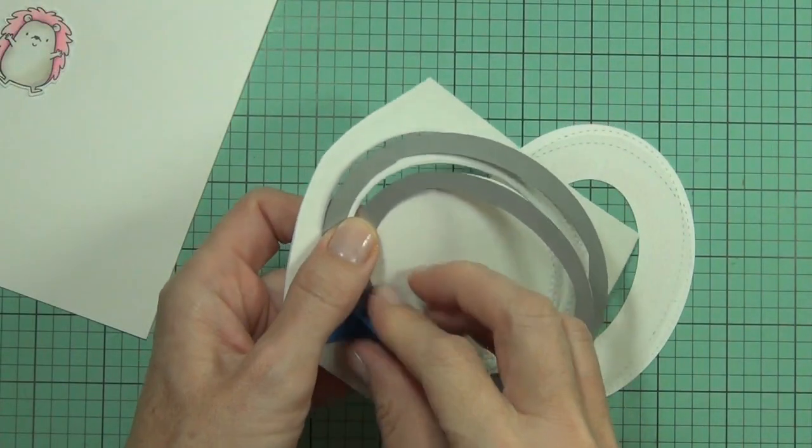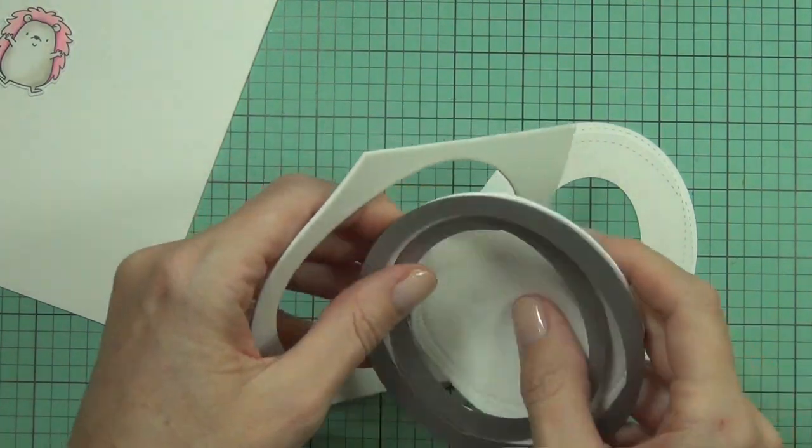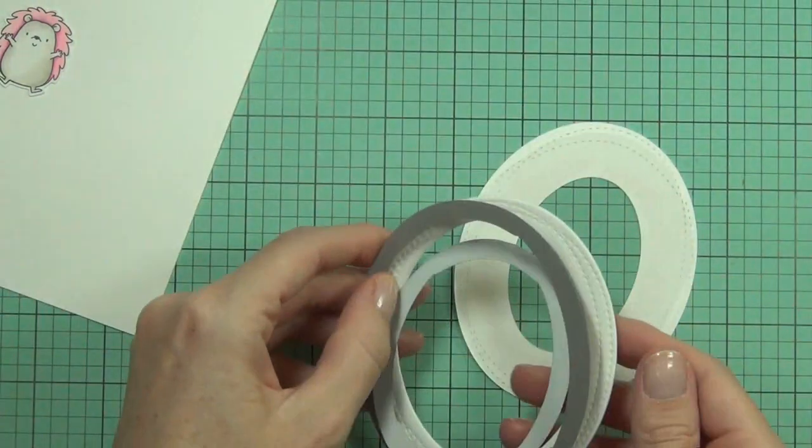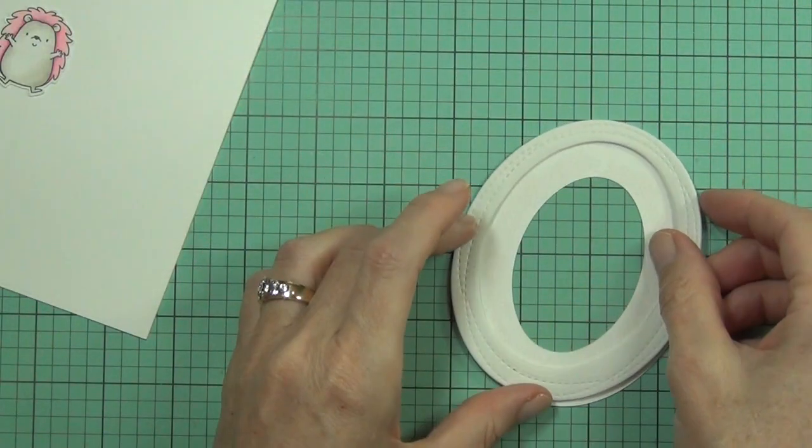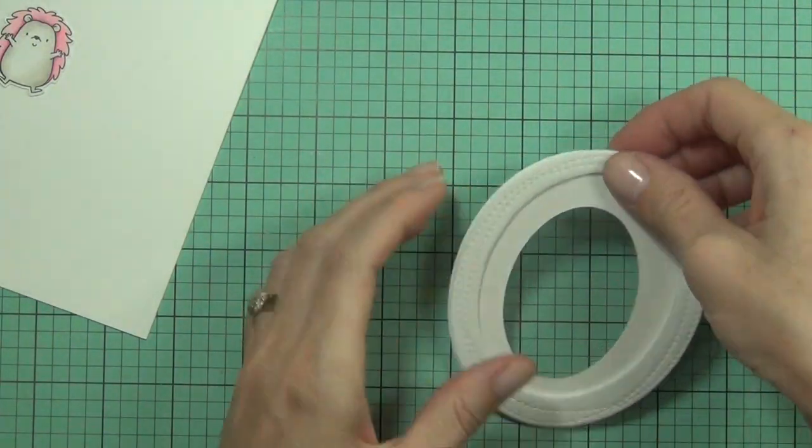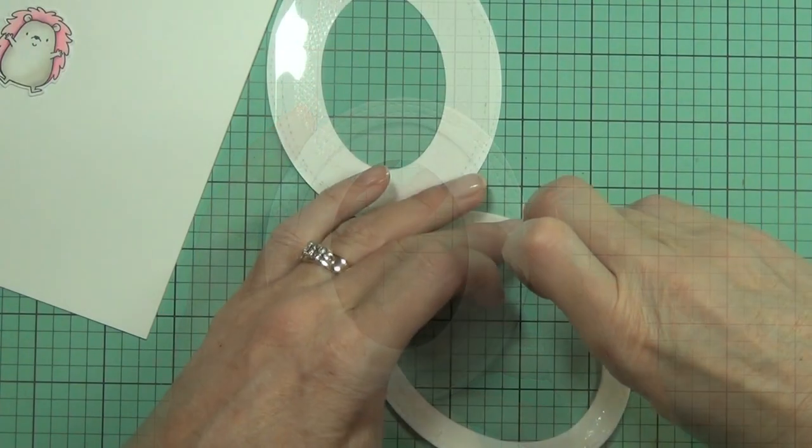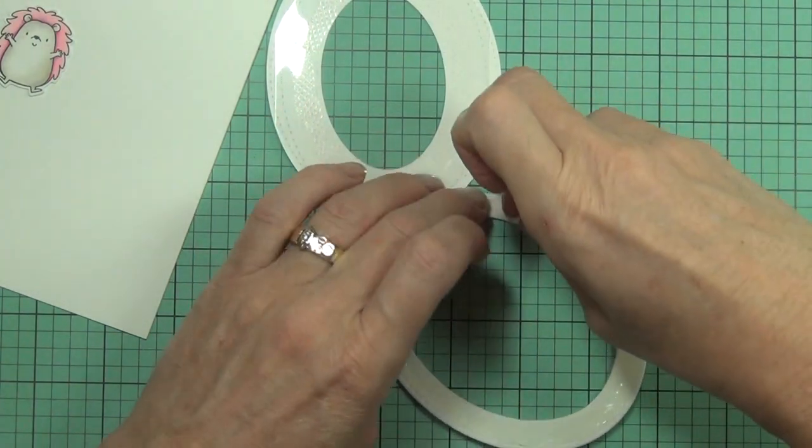I didn't bother die cutting the acetate, but I actually did die cut some fun foam here. It's only a fairly thin fun foam and I used the two oval shapes that were directly beside each other. That's just going to give me a bit of a well to put the shaker elements into.